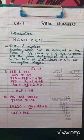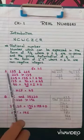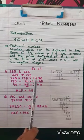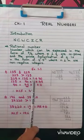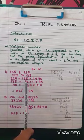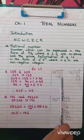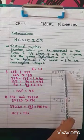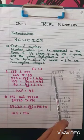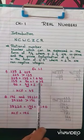Question 1: Use Euclid's division algorithm to find the HCF. First question is 135 and 225. Here 225 is greater than 135. So we divide 225 by 135. After dividing, we get quotient 1 and remainder 90. So we write 225 equals 135 multiplied by 1 plus 90.